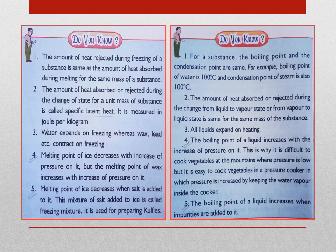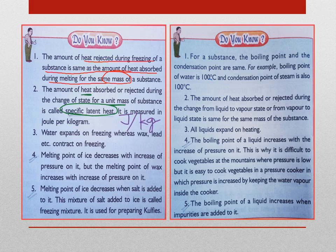During freezing, heat is rejected, while during melting, heat is absorbed. For a given mass of substance, the heat rejected during freezing is equal to the heat absorbed during melting. The heat absorbed or ejected during the change of state for a unit mass of a substance is called specific latent heat. Since heat is an energy, its unit is joule per unit mass kg. Therefore, the SI unit of specific latent heat is joule per kg.